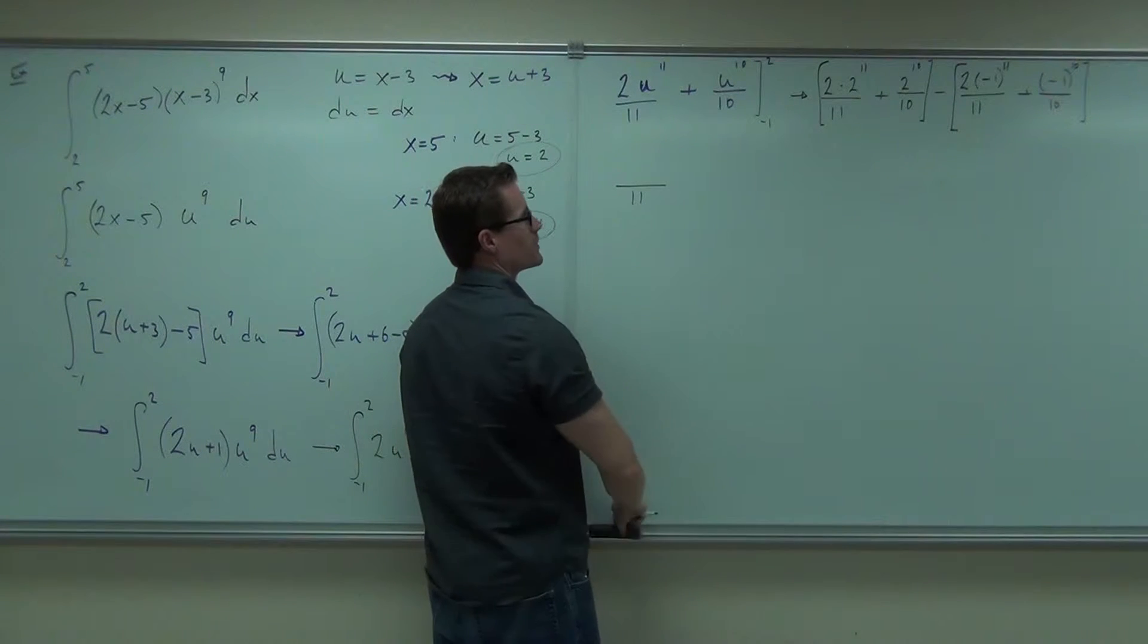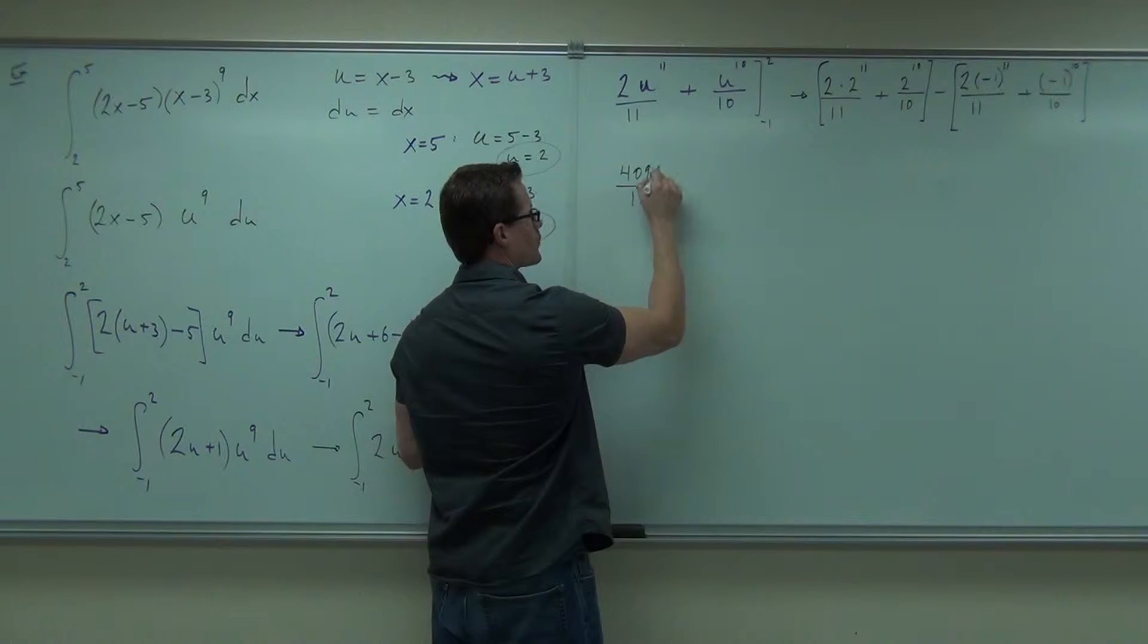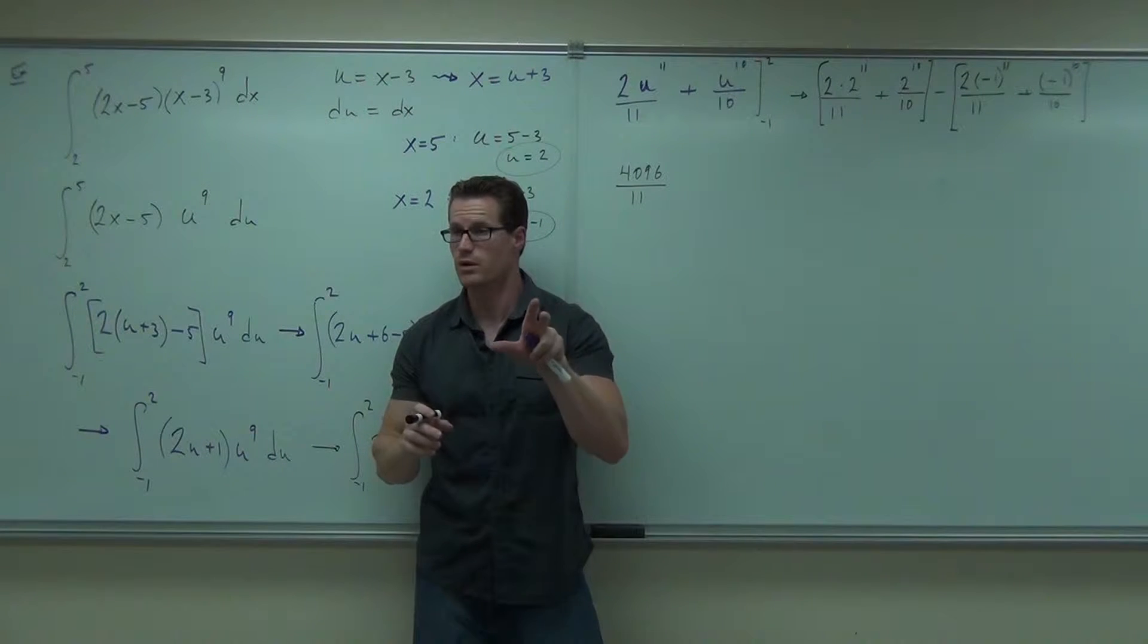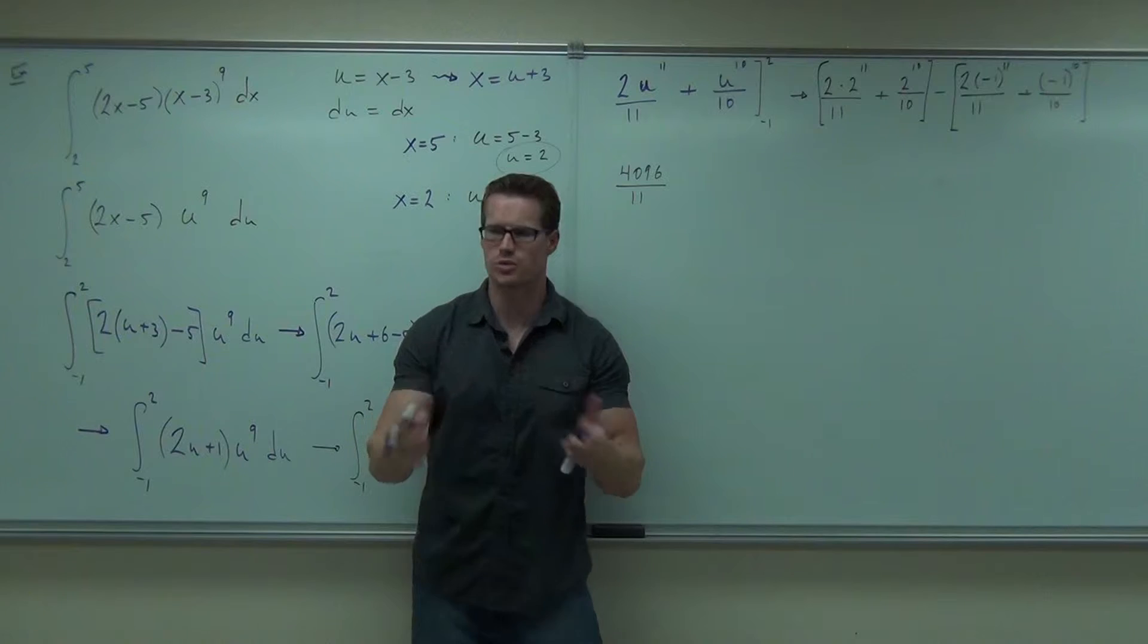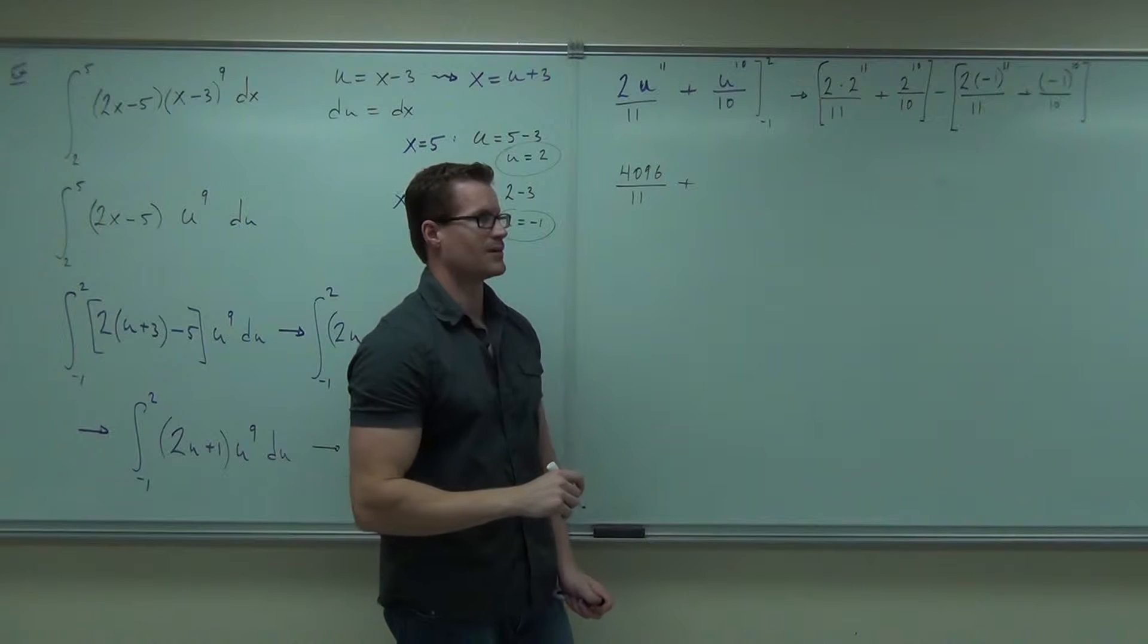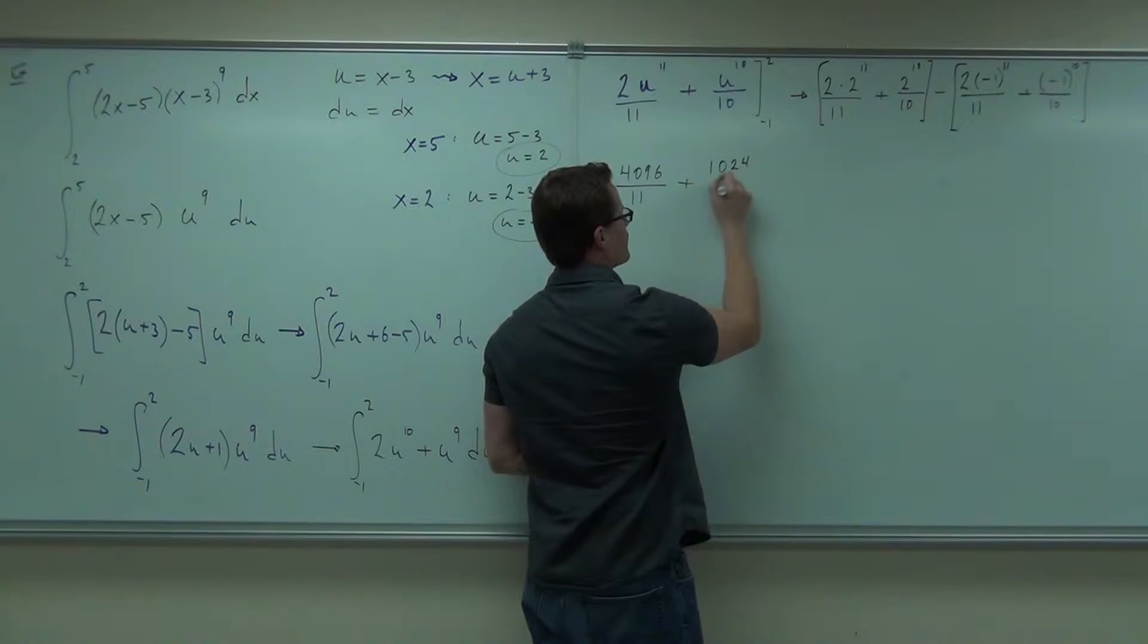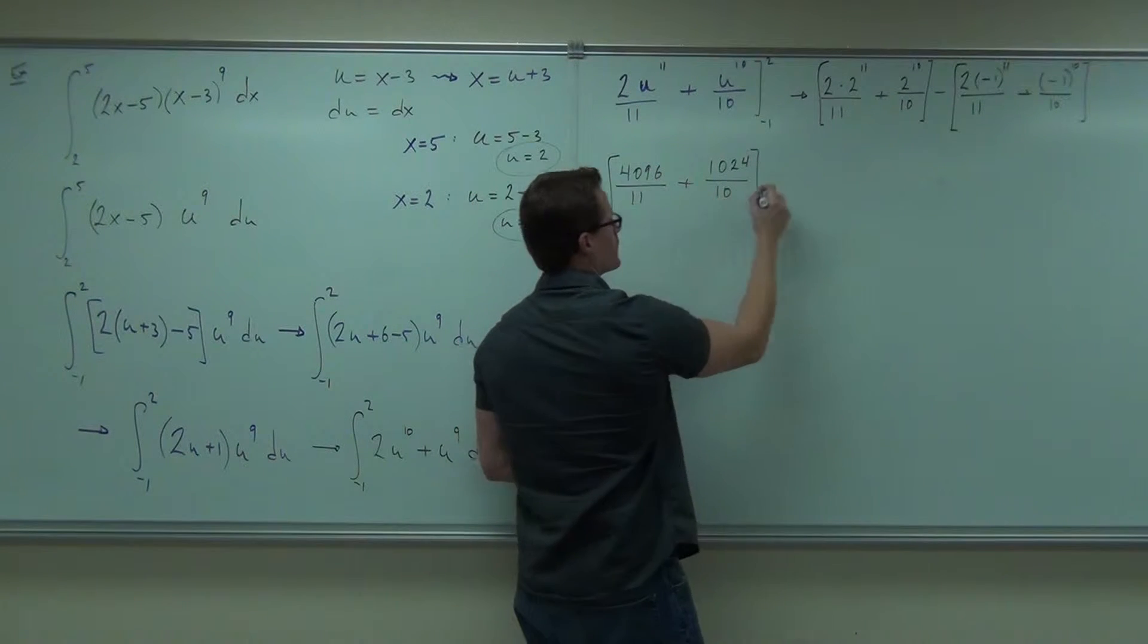I meant 2 to the 12th, not 2 to the 11th. 4,096? Okay. Because 2 to the 12th, 2 times 2 to the 11th is 2 to the 12th. So you get 2 to the 11th times 2, that's going to give you that. Plus 2 to the 10th, 1,024. Okay, all right.